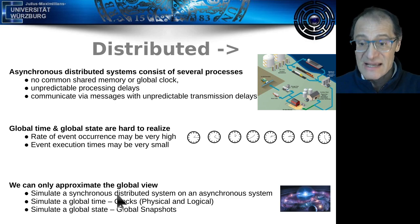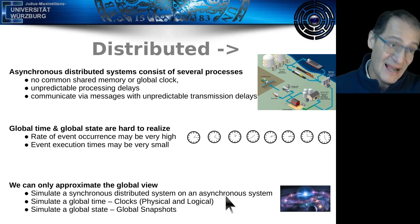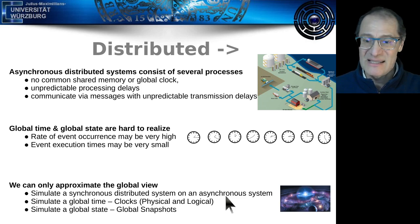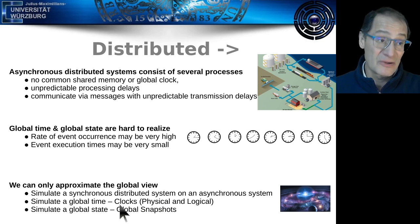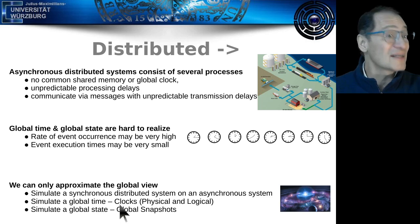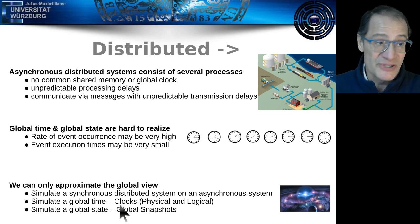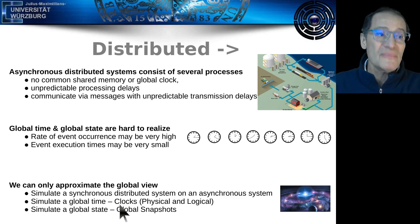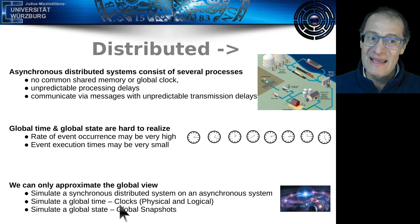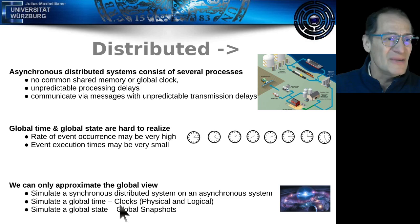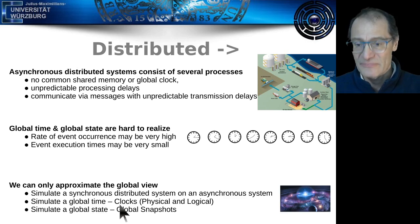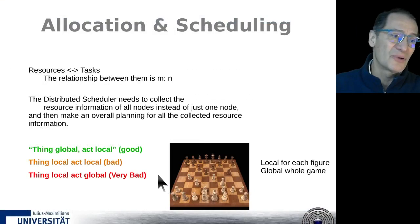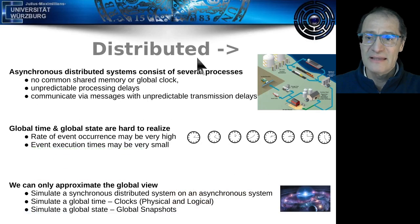The only way to have a consistent global view is to stop all activities, take a snapshot, and see what is the state of every node, every application, and every communication link. But for that we have to stop the system, and in normal operation it's not feasible to stop a control system. So we cannot have a true global view — we have only an approximation. We can simulate synchronous distribution and have a best estimation of the system state.